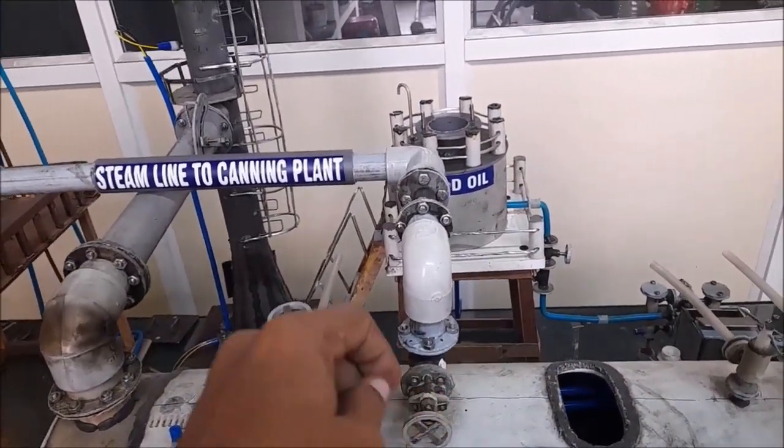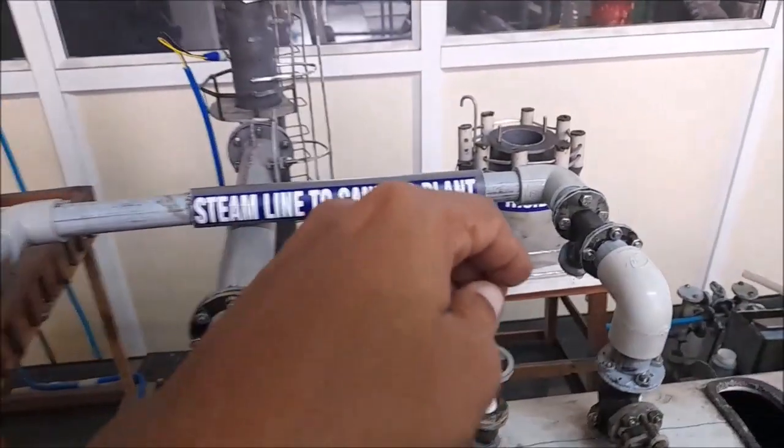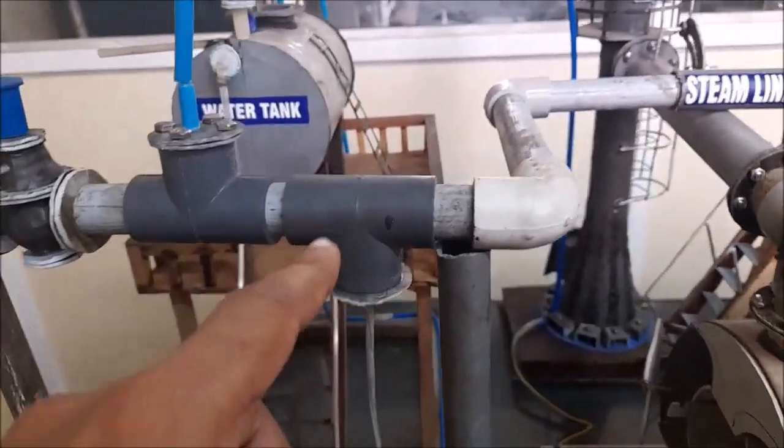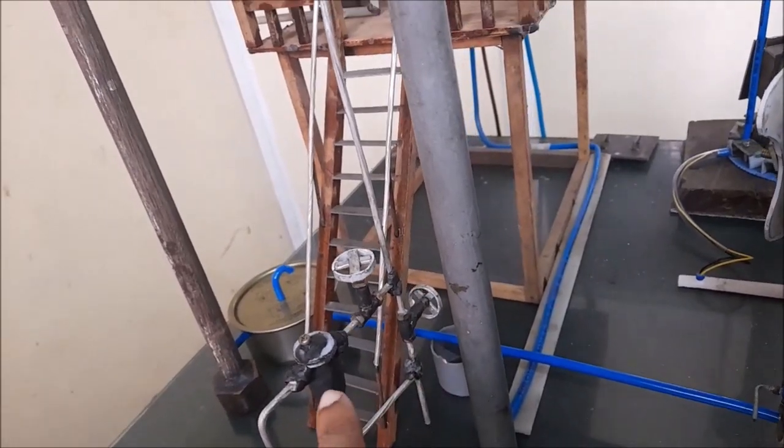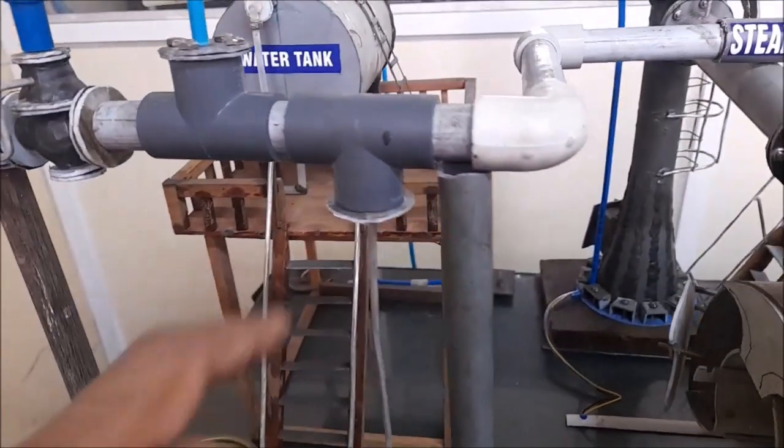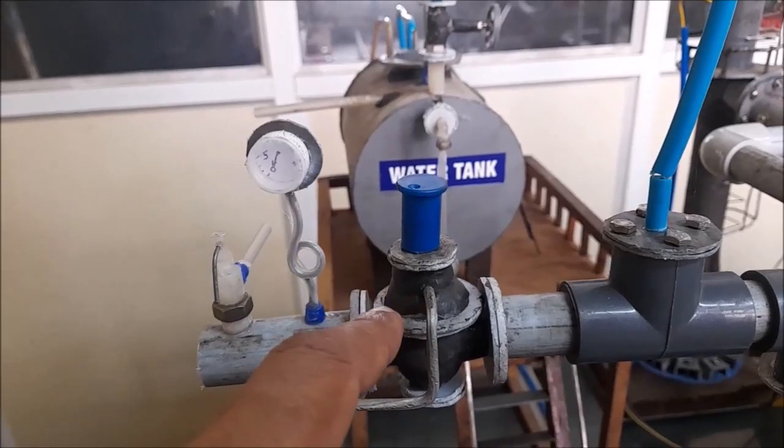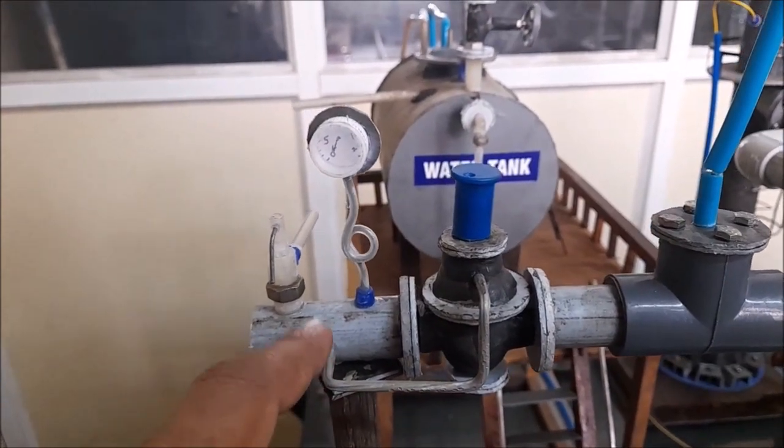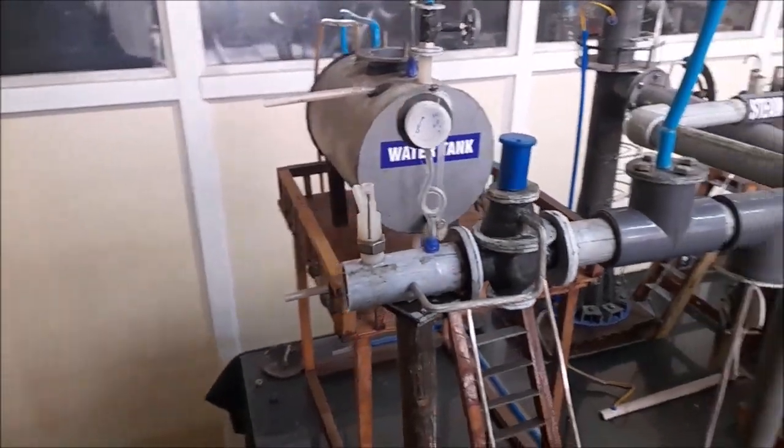Next, when we open this valve, steam is going to the plant. There is a strainer. Steam is going to this line. Condensate is going through this line. This is the drain line and the bucket trap. There is a condensate pot. This is the PRV. This line is sensing the steam pressure. Line pressure gauge, line safety valve. This side is to the plant. Thank you.